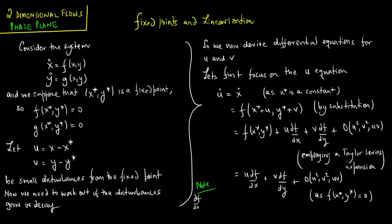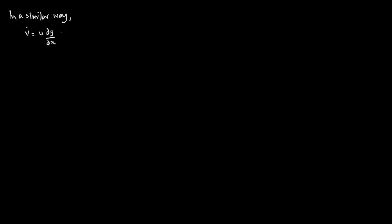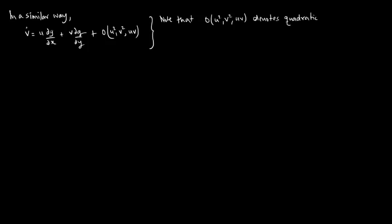Note that df/dx and df/dy are evaluated at the fixed point (x*, y*). Similarly, v-dot equals u·(dg/dx) + v·(dg/dy) plus terms of order u², v², and uv. These quadratic terms in u and v are very small since u and v are small disturbances.